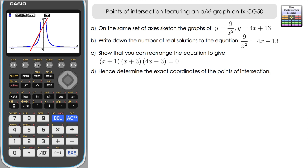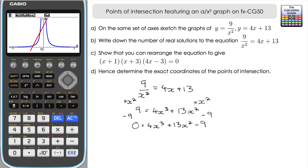Part c: show that you can rearrange the equation to give (x plus 1)(x plus 3)(4x minus 3) equals 0. This is a non-calculator method. The CG50 can't do algebraic manipulation for us. The first step is to take 9 over x squared equals 4x plus 13 and multiply both sides by x squared, giving 9 equals 4x cubed plus 13x squared. Then subtract 9 from both sides to get 0 equals 4x cubed plus 13x squared minus 9.